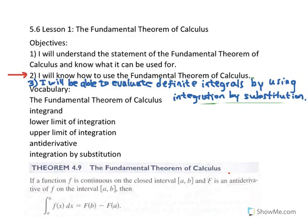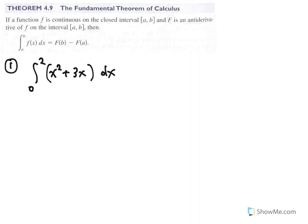We will now look at some examples using the Fundamental Theorem of Calculus, and some examples will require integration by substitution to find an antiderivative. Our first example is the definite integral of x squared plus 3x with respect to x from x equals 0 to x equals 2. We want to find the exact value using the Fundamental Theorem of Calculus. The integrand is continuous on the closed interval from 0 to 2, so we need to find an antiderivative and evaluate it at 2 and 0 and subtract.